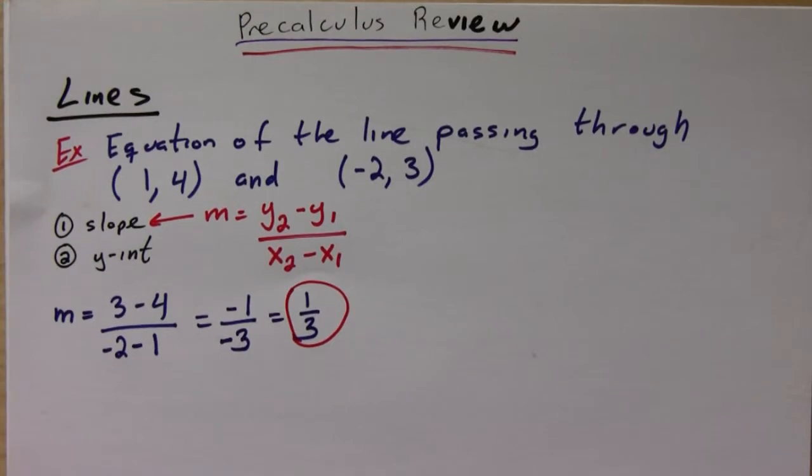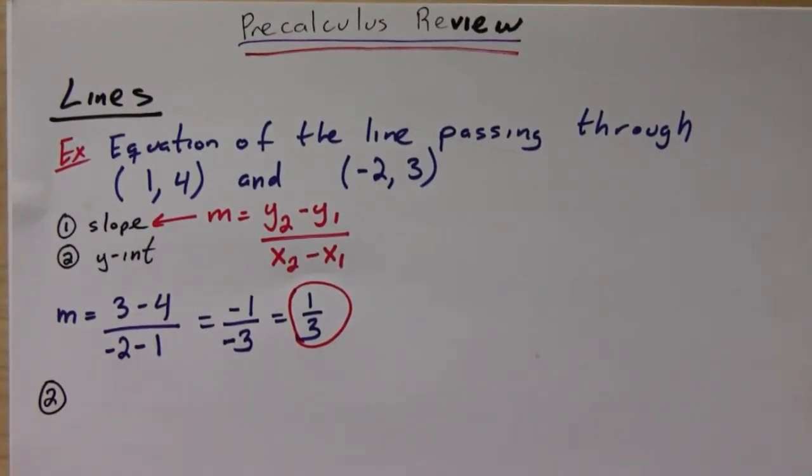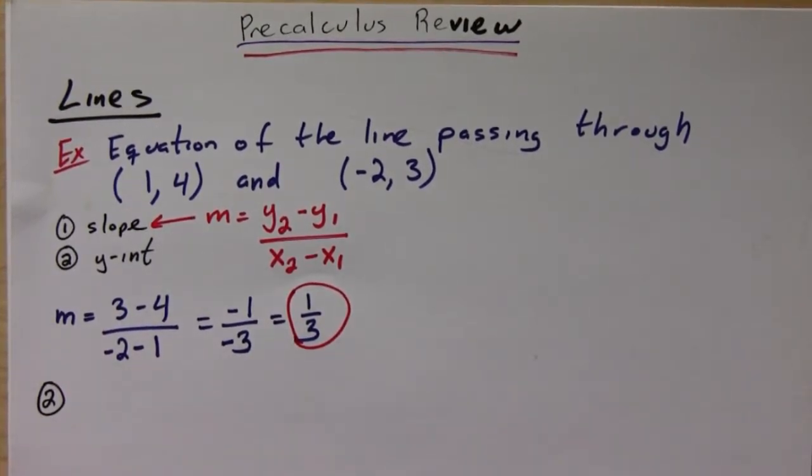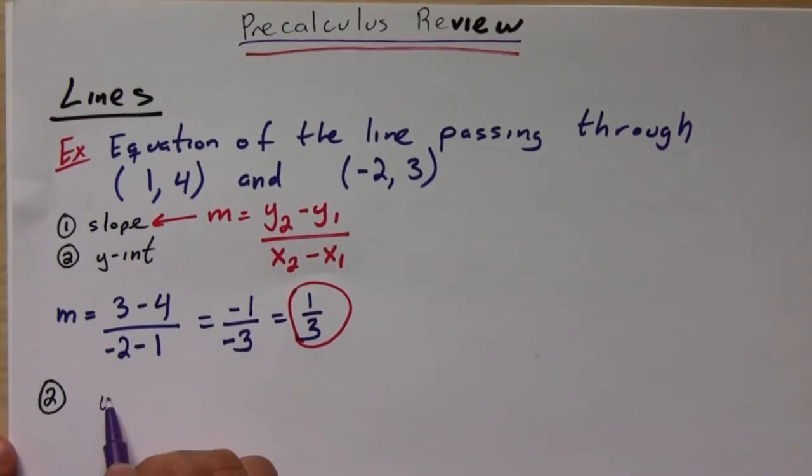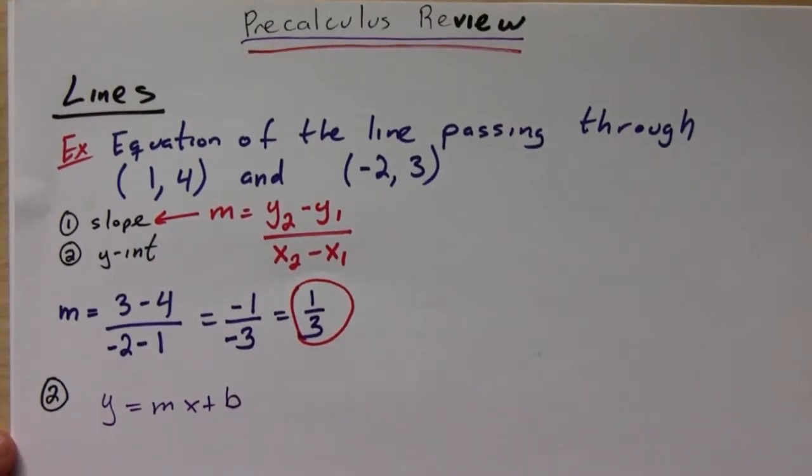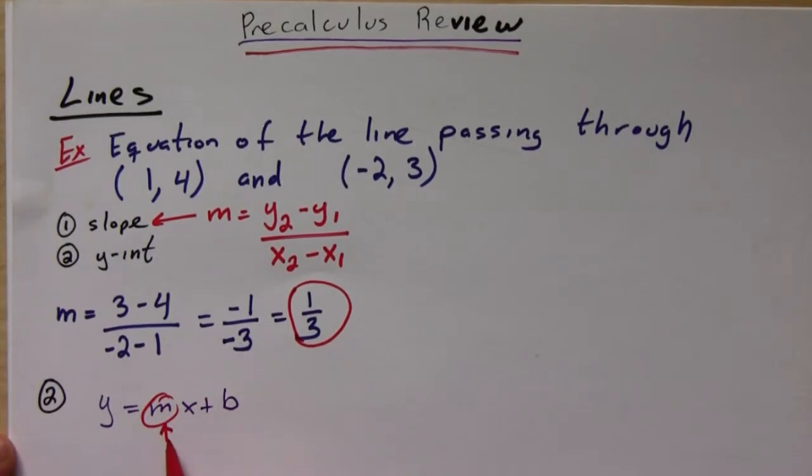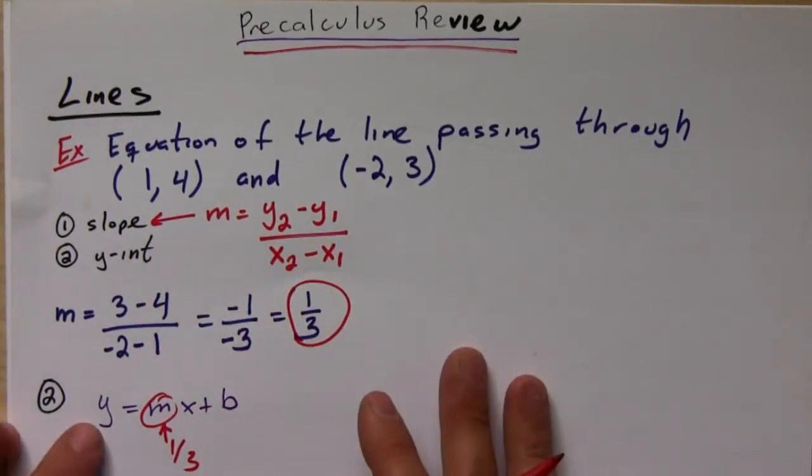Okay, so now that I've got my slope, I can do the second part, which is find the y-intercept. So far what I have is that the line y = mx + b. I know that the slope is 1/3, and I have two points here.